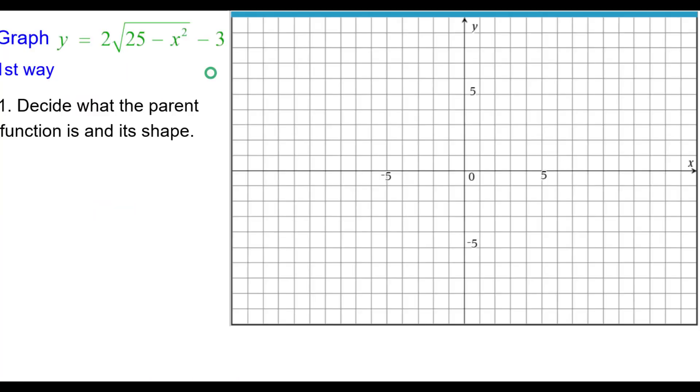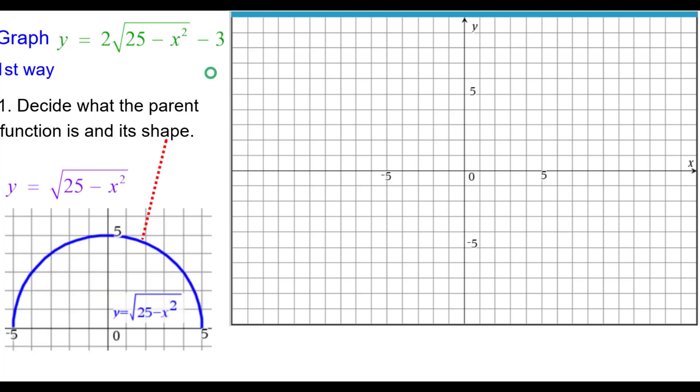First decide what the parent function is and its shape. So this is y equals the square root of the quantity 25 minus x squared, which is a semicircle.